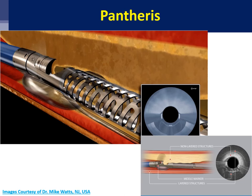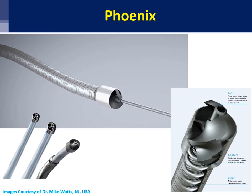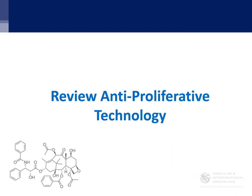Getting more sophisticated: the Pantheris device is similar to the Hawk generation but also allows imaging with OCT, so you can see exactly where you're shaving — if your plaque burden is at the six o'clock position, it makes sense to shave there rather than at twelve o'clock. The Jetstream device from Boston Scientific uses a front cutter with blades up or blades down, cutting and removing plaque with active aspiration. Rotarex has just been released and also has active aspiration. The Phoenix device cuts and, like an Archimedes screw, collects all the plaque inside the catheter.